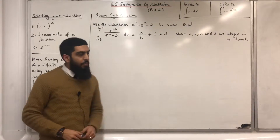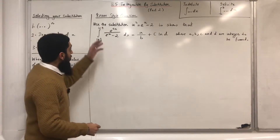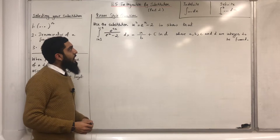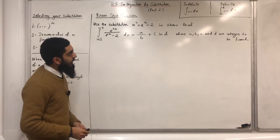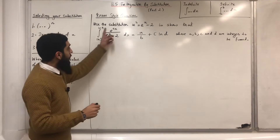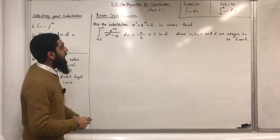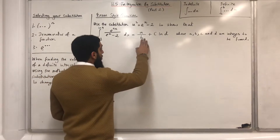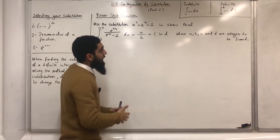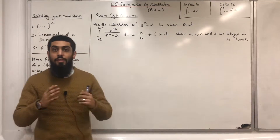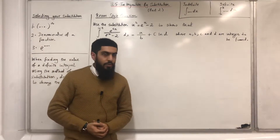Let's tackle this problem. Use the substitution u² = eˣ − 2 to show that this definite integral can be written in the form a over b plus e · ln(d), where a, b, c and d are integers to be found.